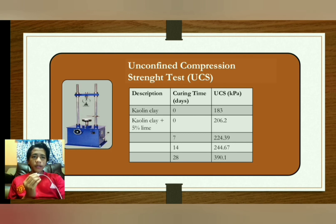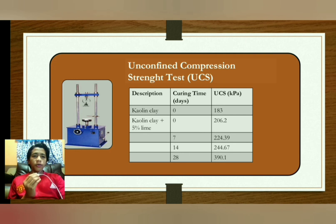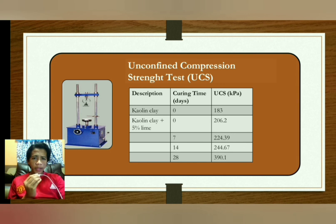The third test is the Unconfined Compressive Strength (UCS) test. In this research, four curing time periods were used: 0, 7, 14, and 28 days. For kaolin clay with 0% lime, the UCS is 183 kPa. Kaolin clay with 5% lime at 0 days curing time is 206.2 kPa; at 7 days curing time it is 1,024.39 kPa; at 14 days curing time it is 1,044.67 kPa; and at 28 days curing time it is 390.1 kPa.